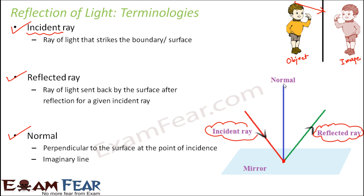From this point of incidence, there is a line which is perpendicular to the surface — this line is called the normal. You do not get to see the normal because it is an imaginary line. We have the concept of normal in order to make the study of reflection of light easier. It doesn't exist in reality, but it is an imaginary concept which helps us build other concepts of reflection of light.